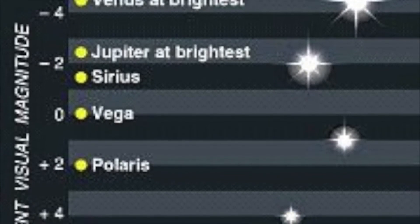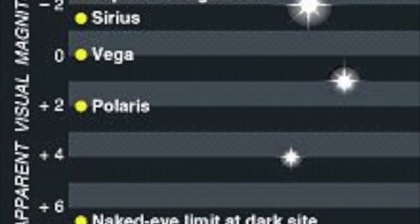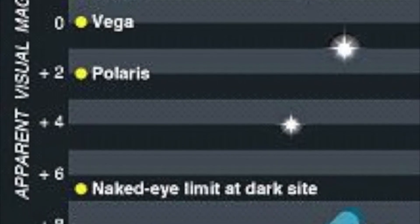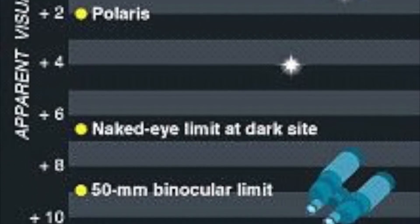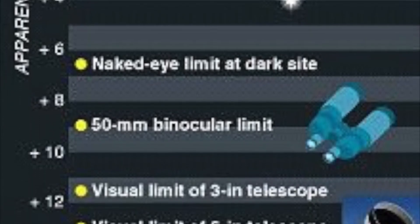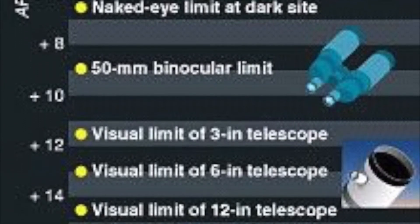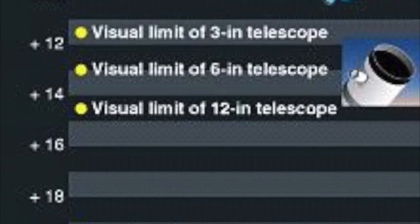Even dimmer than Polaris are stars in the 3rd, 4th, 5th, and 6th magnitudes. And anything dimmer than that requires technology to make them visible to us. So with a pair of good binoculars, we can see down to the 9th magnitude. If we were using a 3-inch or a 6-inch or a 12-inch telescope, we can see down to the 12th or 13th or 14th magnitudes, extremely dim stars.